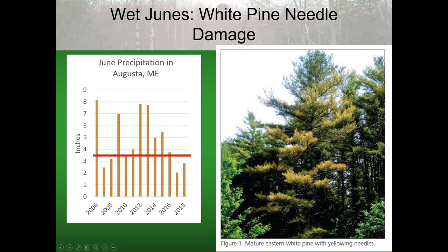First, looking at spring precipitation. Since the mid-2000s, when we look at spring precipitation — in this case in June — we're seeing that we've had a number of years where the amount of precipitation is getting up to more than double what the average is. And this is favoring needle fungi that we find on eastern white pine. They're present in the tree, but in these wet springs, it's favoring the spread of the fungi from infected needles to new needles.